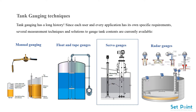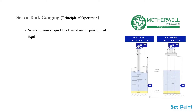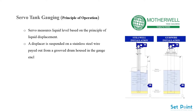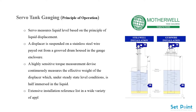Servo tank gauges measure liquid level based on the principle of liquid displacement. A displacer is suspended on a stainless steel wire paid out from a grooved drum housed in the gauge enclosure. A highly sensitive torque measurement device continuously measures the effective weight of the displacer, which under steady-state level conditions is half immersed in the liquid. The system has an extensive installation reference list across a wide variety of applications and has low maintenance requirements.